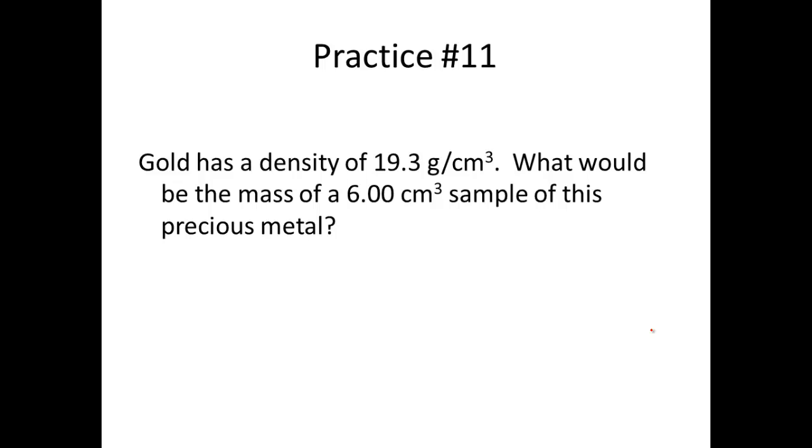Our second problem. Gold has a density of 19.3 grams per cubic centimeter. So we know it has a density, 19.3 grams per cubic centimeter. What would be the mass of a 6 cubic centimeter sample of this precious metal? So 6 cubic centimeters is a volume. We know the density of the object. And we're trying to find the mass of the object. So our equation is going to be set up. Instead of density equals mass divided by volume, we're going to rearrange that equation to solve for mass. So mass is going to equal density times volume. Showing our equation is our first part to solve this problem.